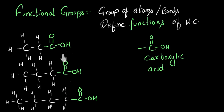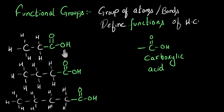So we can say the common acidic function is happening because of this group of atoms. Whenever this group of atoms attaches to any hydrocarbon, it makes it have acidic functions — it defines the function of the hydrocarbon. Therefore, we call this group of atoms a functional group. Now let's look at some other functional groups and the awesome functions they give.